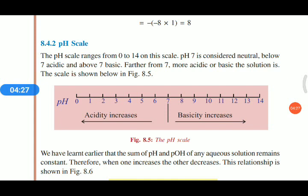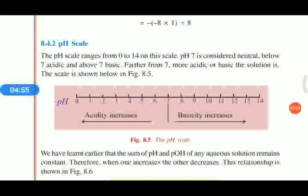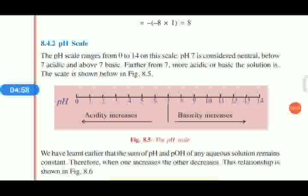pH scale contains numbers from 0 to 14. It ranges from 0 to 14. pH 7 is considered as neutral. Below 7 is acidic and above 7 is basic. In detail, if a solution's pH value is 0 to 6.9, it is an acid. If it is 7, it is neutral. If its pH value is 7.1 to 14, it is base.